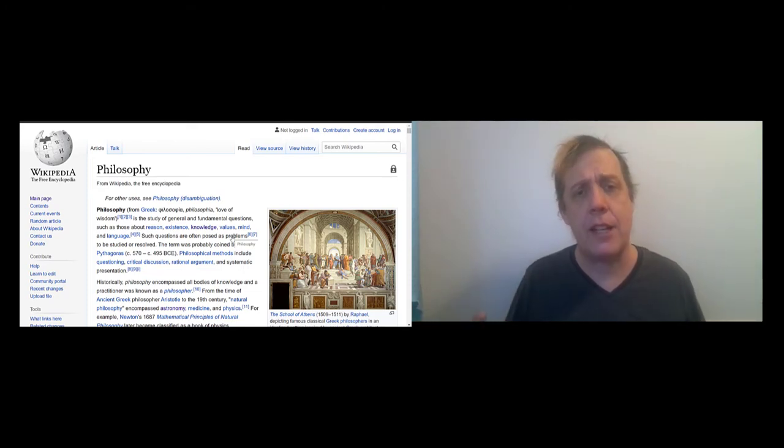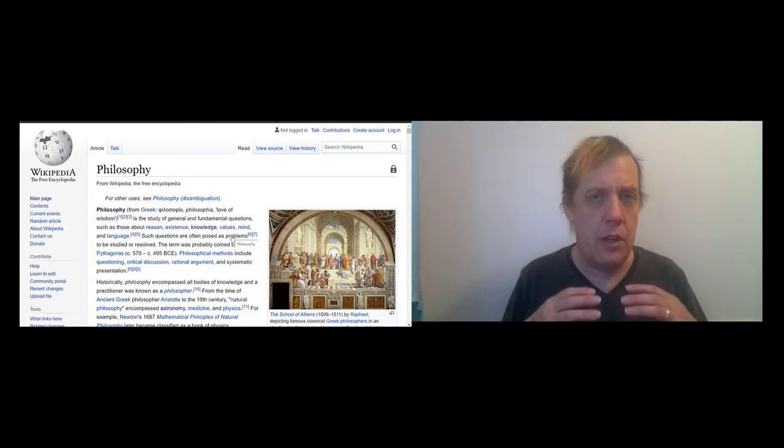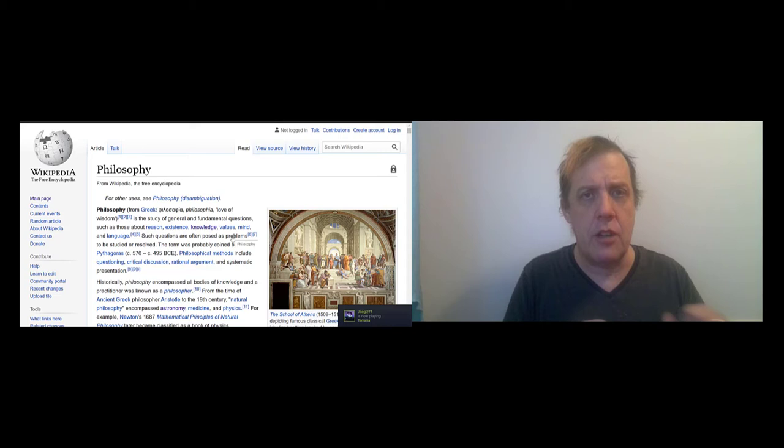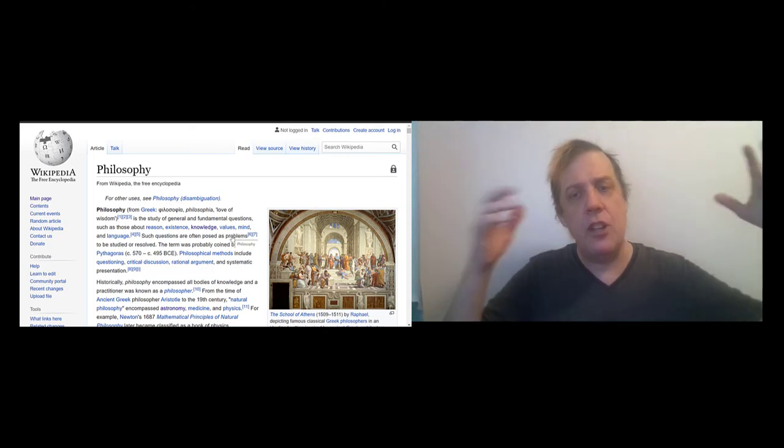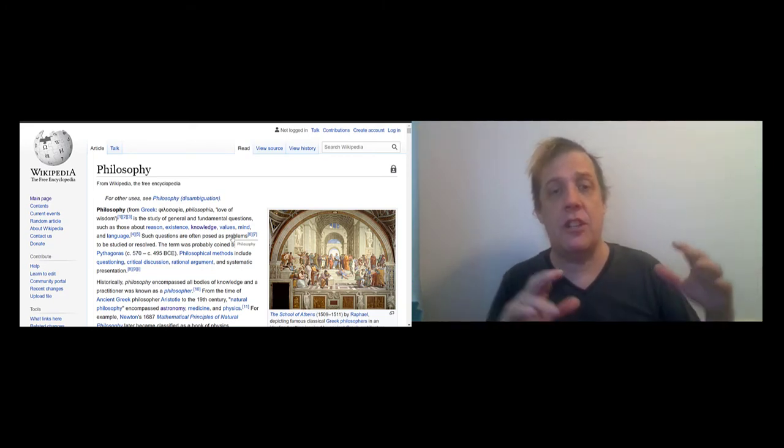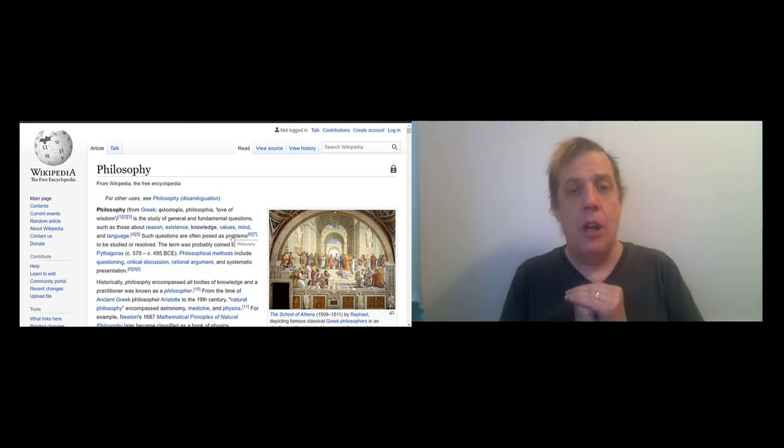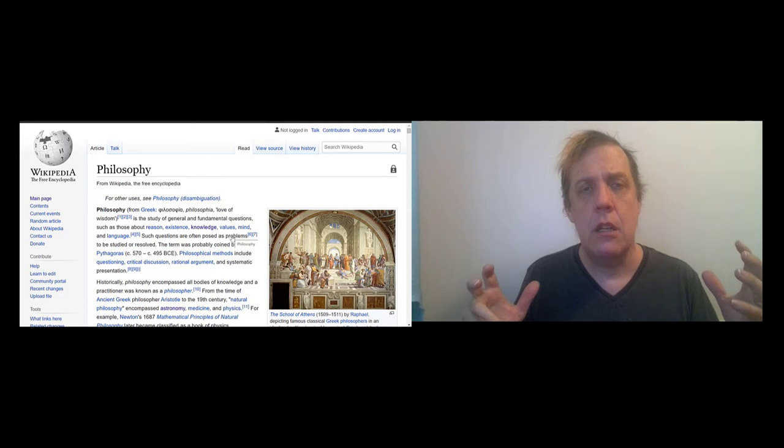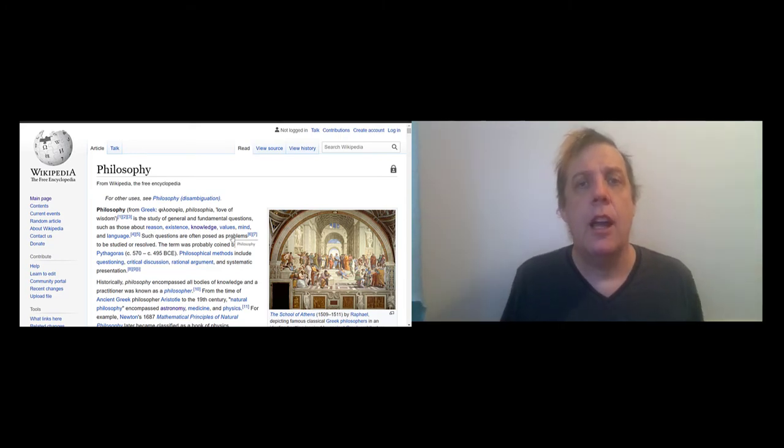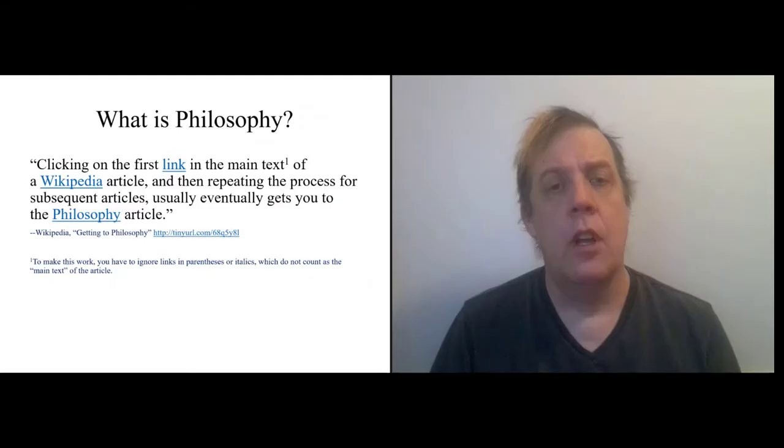So what happened there? Well, the way Wikipedia is written, the first word that is your entry is defined in the first sentence, and it's generally defined in terms of something more general than it. So the first link in any Wikipedia article is to something that is more abstract than the thing that you're initially talking about. You go from a star to astronomy in general, then astronomy to science in general, and pretty soon you just end up at the highest possible level of generality.